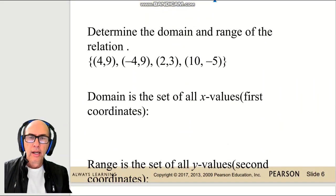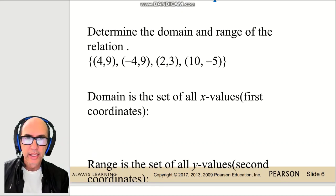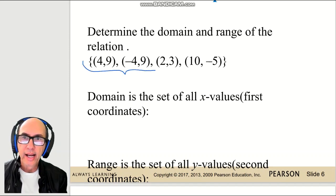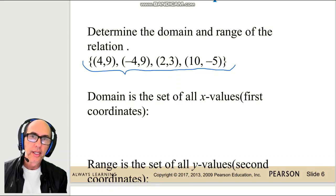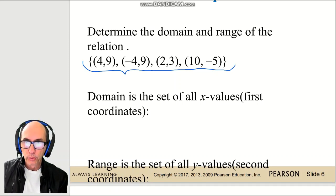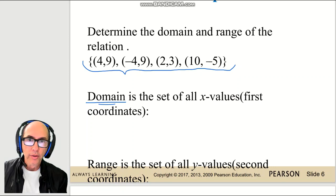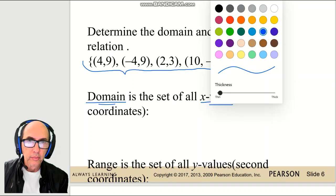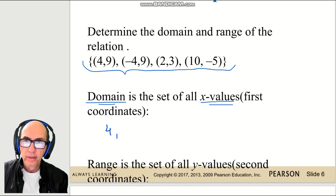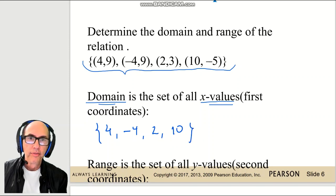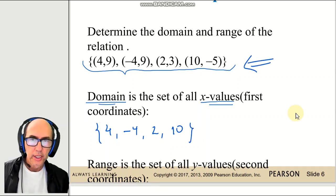Let's see a simple example. We have this set of ordered pairs: (4, 9), (−4, 9), (2, 3), and (10, −5). The domain is all the x-values of the set, which means 4, −4, 2, and 10 — this is the domain of that set.